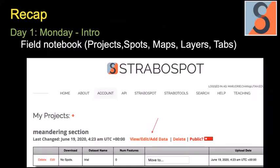To recap what happened yesterday on Monday: we gave a brief overview and introduction. We talked about how we use StraboSpot as a field notebook, how you would set up projects — on the desktop you use the little red symbol to start a project — how we use the spot concept, and how you can use maps, layers, and different tabs, and how to add and modify your data.